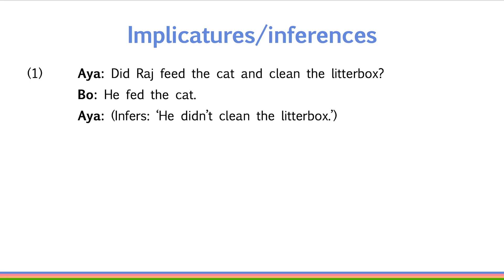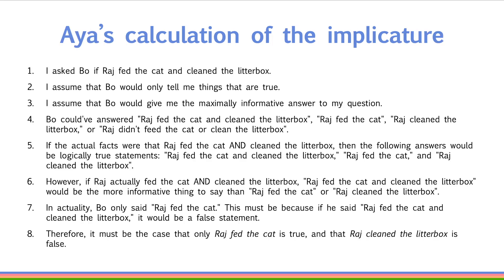Here is how this implicature would be calculated by Aya. I asked Bo if Raj fed the cat and cleaned the litter box. I assumed that Bo would only tell me things that are true. I assumed that Bo would give me the maximally informative answer to my question. Bo could have answered: Raj fed the cat and cleaned the litter box; Raj fed the cat; Raj cleaned the litter box; or Raj didn't feed the cat or clean the litter box.